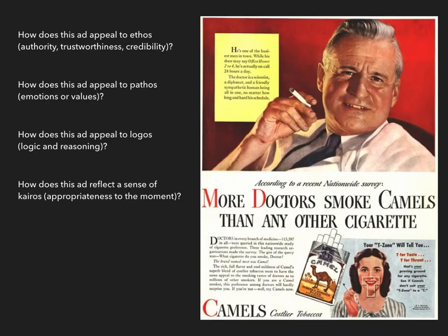Now let's try and practice applying our understanding of rhetorical appeals to a very explicit attempt at persuasion: an advertisement. One of the nice things about doing a rhetorical analysis of an advertisement is that we usually know the exigence — to sell something. It's not always that simple, but it's a good starting point. Here we have an advertisement from the 1950s selling Camel cigarettes.